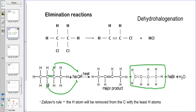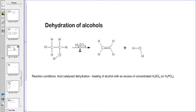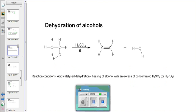This reaction requires heat in the presence of ethanol as a condition. Another reaction we can look at as a dehydration reaction is the dehydration of alcohol. If you look here, we have an alcohol — ethanol — and in the presence of sulfuric acid and heat, we see that it can become ethene and water. The reaction conditions for this dehydration of alcohol are that the alcohol must be heated with a concentrated sulfuric acid or phosphoric acid, and this is called an acid-catalyzed dehydration reaction.